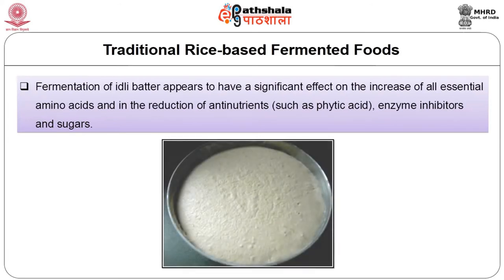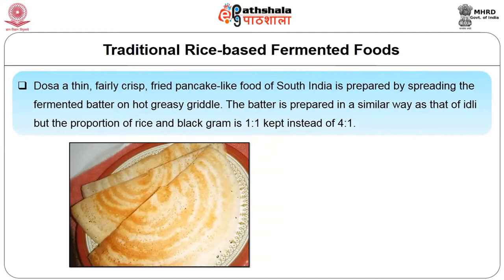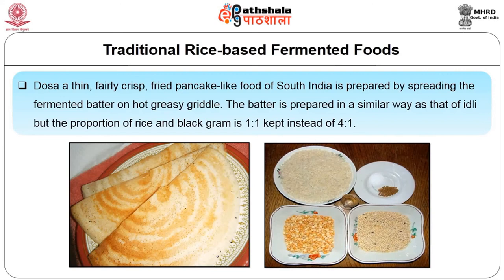Steamed Idli contains about 3.4% protein, 20.3% carbohydrate and 70% moisture. Dosa is a thin, fairly crisp, fried pancake-like food of South India which is prepared by spreading the fermented batter on a hot greasy griddle. The batter is prepared in a similar way to that of Idli but the proportion of rice and black gram is 1:1 instead of 4:1. The microbiological, physical and biochemical changes of Dosa during fermentation and its nutritive value are quite similar to Idli.